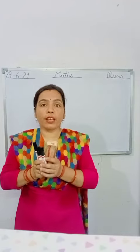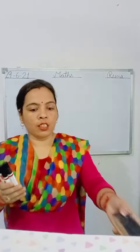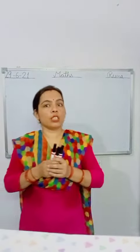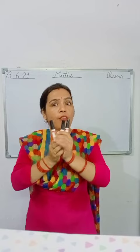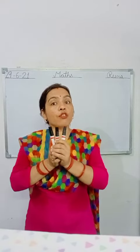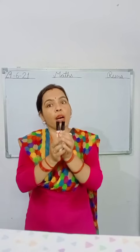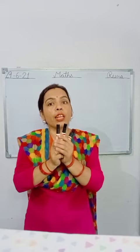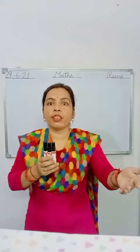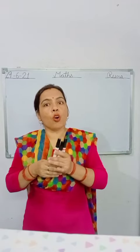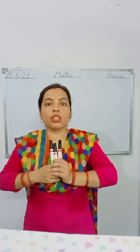When I have a total of four objects and I gave one duster to my friend, then how many objects do I have left? I have one, two, three markers left. How many? Three markers left. That means when I have four objects and I gave one object to my friend, the answer is three.